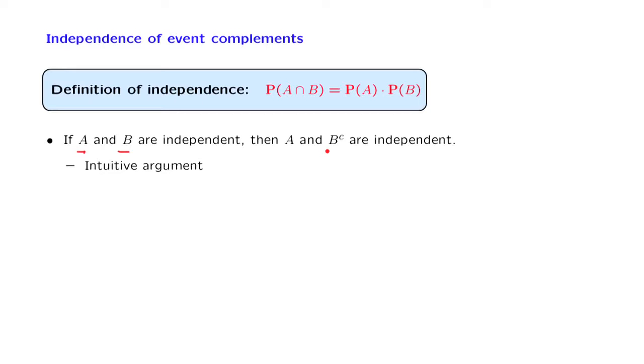But let us now verify this intuition through a formal proof. The formal proof goes as follows. We have the two events, A and B. And event A can be broken down into two pieces. One piece is the intersection of A with B.